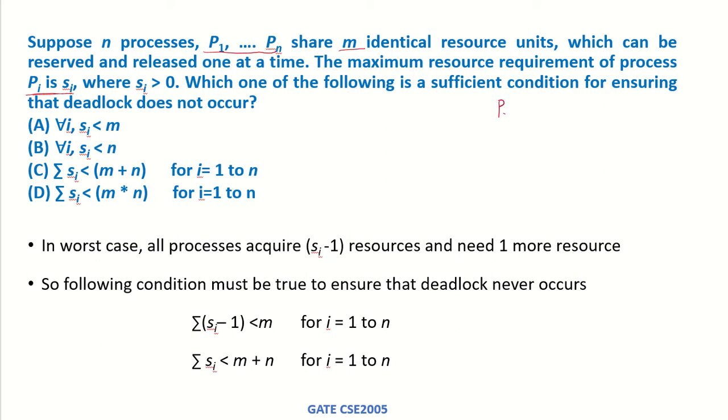So process P1 maximum requirement is S1, process P2 maximum requirement is S2, and so on. Process Pn maximum requirement is Sn resources. Which one of the following is a sufficient condition for ensuring that deadlock does not occur?